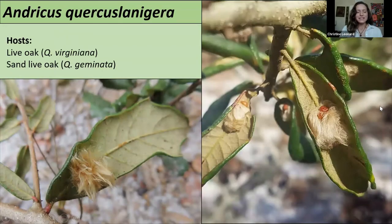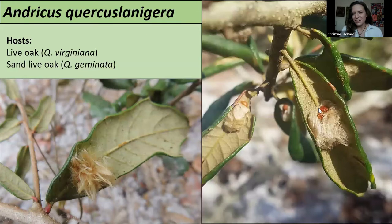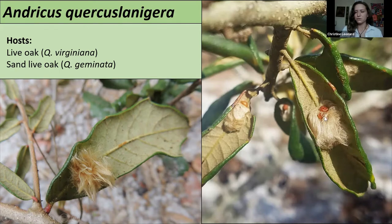Another species within that same genus, Antrochus quercus lanigera, is often only found on live oak and sand live oak. I just think these are adorable because they're these tiny little kernels — a fully mature kernel usually develops along the underside of the midrib of the leaf. As a defensive mechanism they cover themselves with tiny filaments that resemble hair, which makes it harder for predators to get into the kernel. They're quite soft and fun to play with if you find these out in the wild.